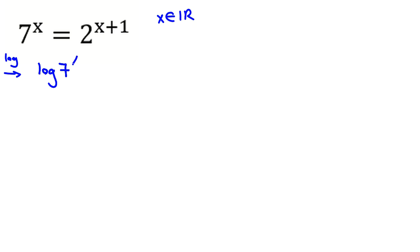So we have log 7 to the x equals log 2 to the x plus 1. Now, because we have x in the power, we should use this rule: log a to the power of x equals x times log a. You can take x in front of log.